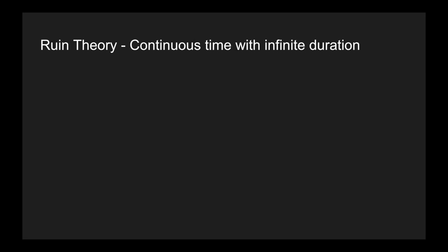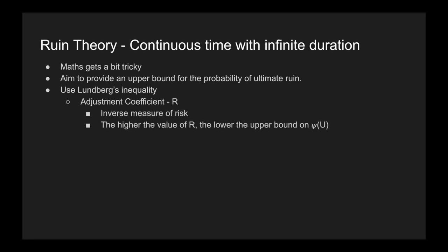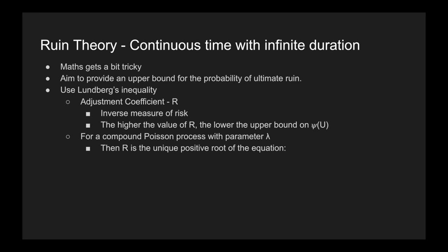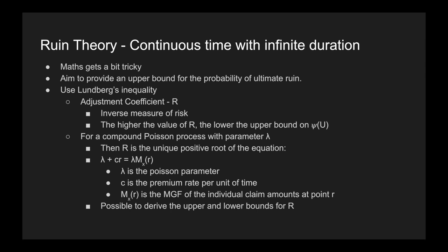It gets even more mathematically tricky when looking at continuous time with infinite duration. The best we can do is provide an upper bound for the probability of ultimate ruin, using Lundberg's inequality and the adjustment coefficient r, which is an inverse measure of risk. The higher the value of r, the lower the upper bound on the ultimate probability of ruin. For a compound Poisson process with parameter lambda, r is the unique positive root of the equation where lambda is the Poisson parameter, C is the premium rate per unit of time, and M_X(r) is the moment generating function of the individual claim amount at point r. It is then possible to derive upper and lower bounds for r, and this model can be extended further to include the reinsurance impact on ruin.